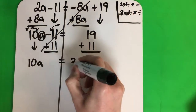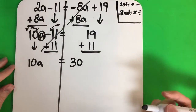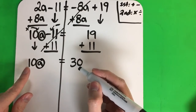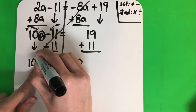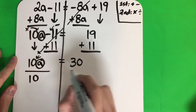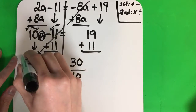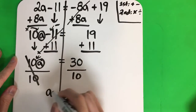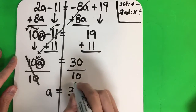Now I want A alone. A is on the left. 10 is also on the left. Nothing in the middle — multiply. The opposite is divide by 10. Copy, divide by 10. 10 divided by 10 is 1 — cancel. Copy A equals 30 divided by 10 is 3.